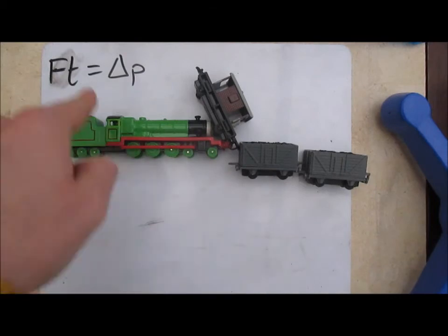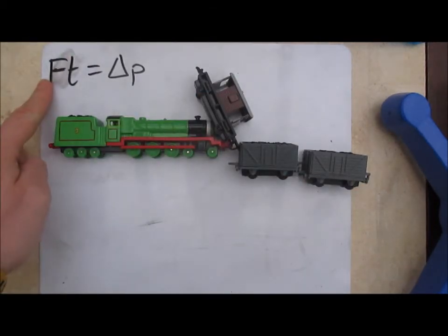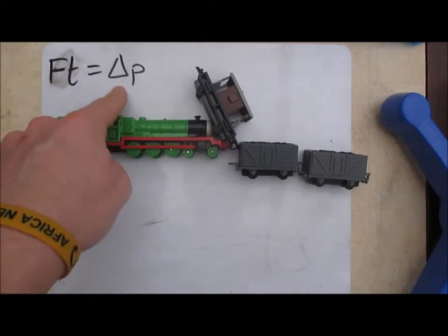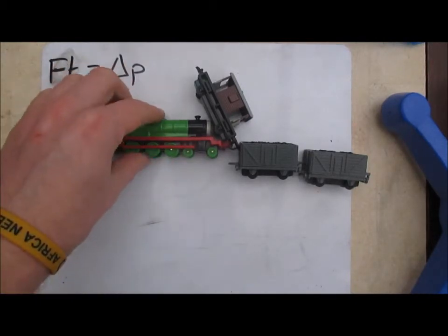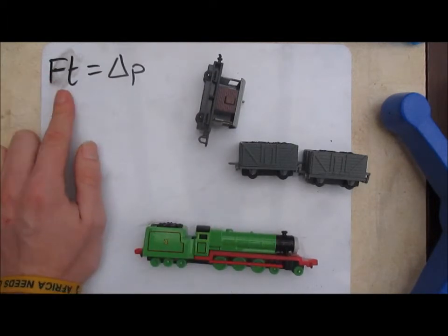So if the time is longer as the impact is absorbed by everything over here, that means the force actually transferred to Henry can be much smaller for the same change in momentum. And actually that is probably what saves Henry, means he can just be rebuilt at Crewe and given a new shape later on in the series.